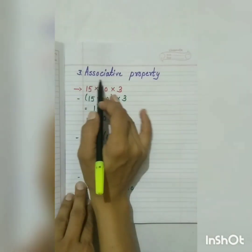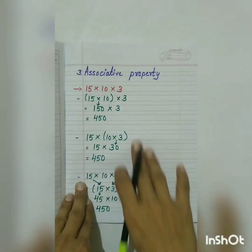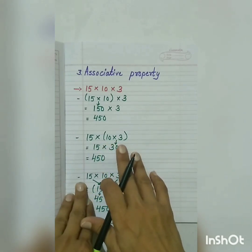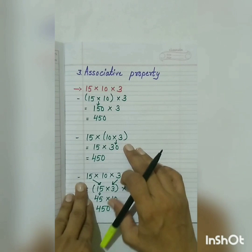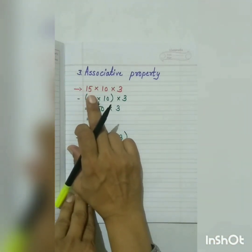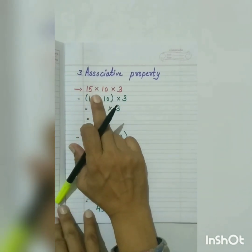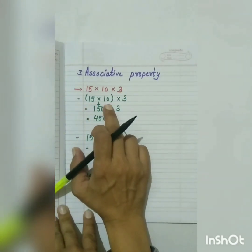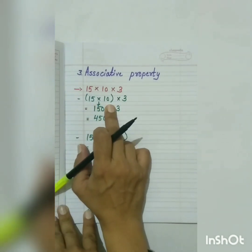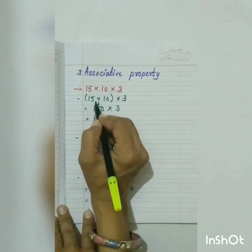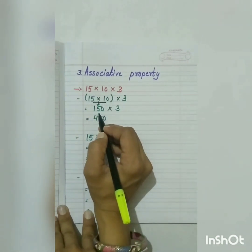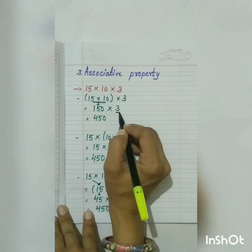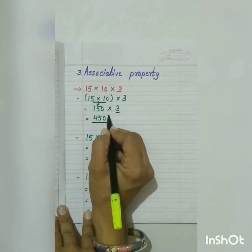Our third property is associative property. This property is used when we multiply 3 or more numbers. It is also similar to commutative property in that it talks about the order. Here I have taken 3 numbers to multiply: 15 multiplied by 10 multiplied by 3. First we multiply two numbers — 15 multiplied by 10 — we get 150. Then we multiply that result with the third number, 3, and the product we get is 450.